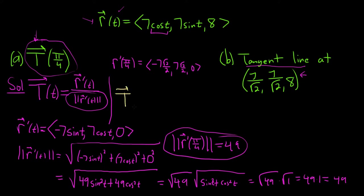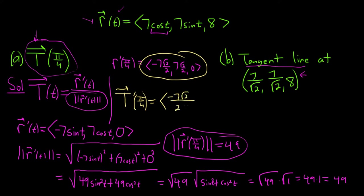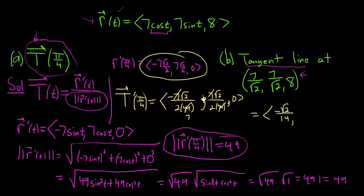Now T(π/4) equals r'(π/4) divided by 7. Dividing each component: -7·(√2/2) / 7 gives -√2/14, and 7·(√2/2) / 7 gives √2/14, and 0/7 is 0. So T(π/4) = ⟨-√2/14, √2/14, 0⟩. This is our unit tangent vector.